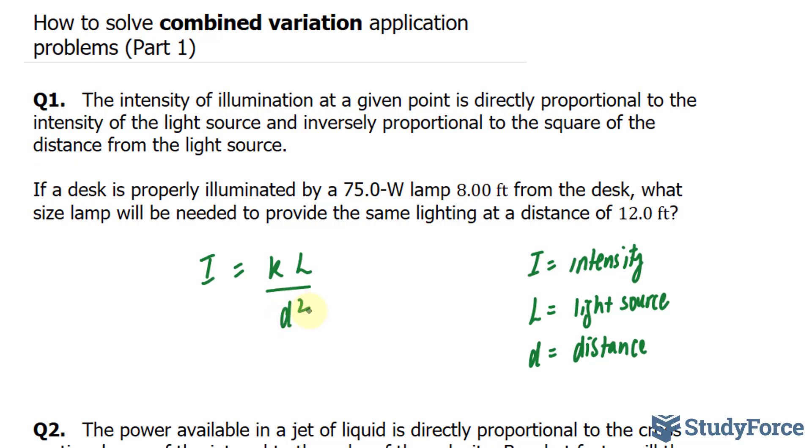Now that we have our equation, we can start to fill in the blanks. If a desk is properly illuminated by a 75 watt lamp 8 feet away, let's write that down: L equals 75 and D equals 8. What size lamp is needed to provide the same lighting if we further the distance to 12 feet?